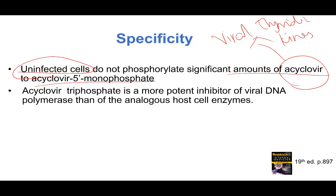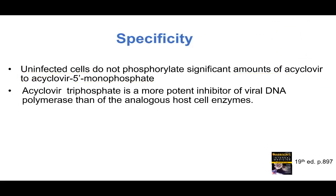Viral kinase will be present only in the infected cell. Number one. The second reason is acyclovir triphosphate is a more potent inhibitor of viral DNA polymerase compared to your normal cellular DNA polymerase.